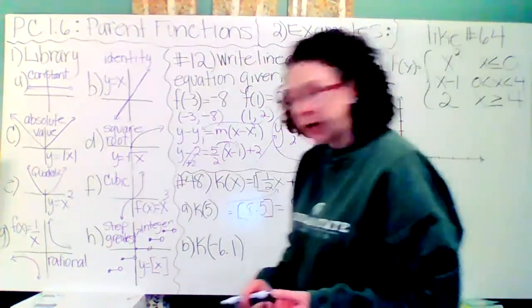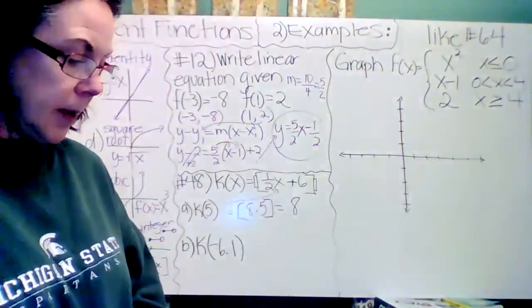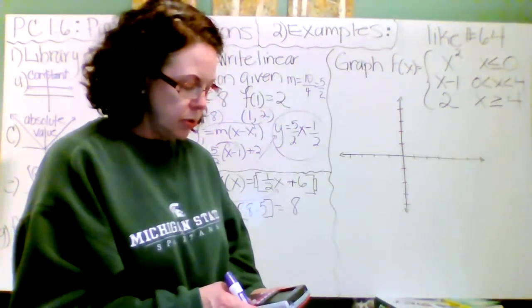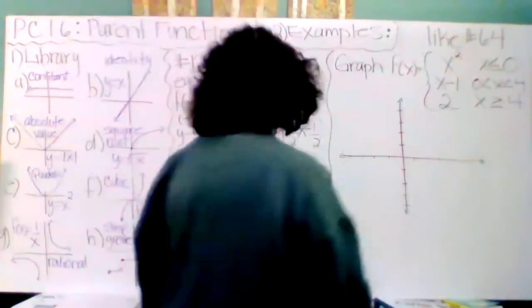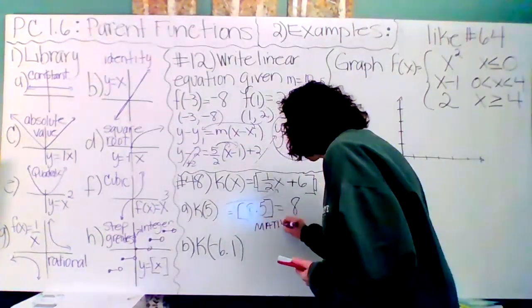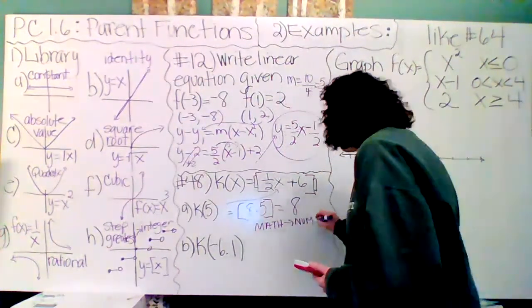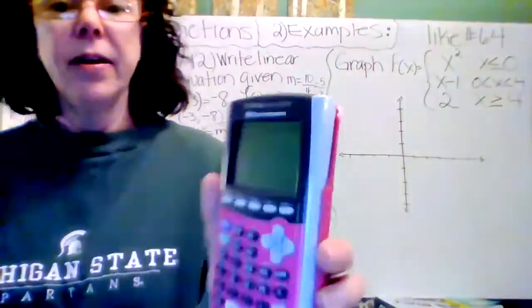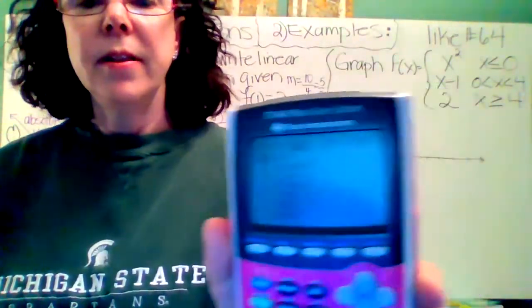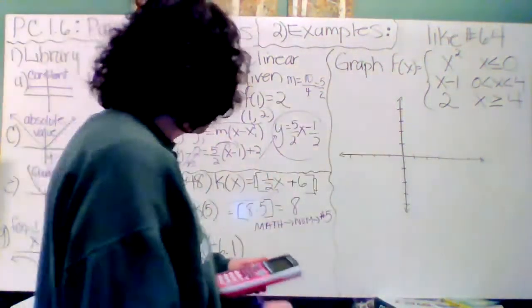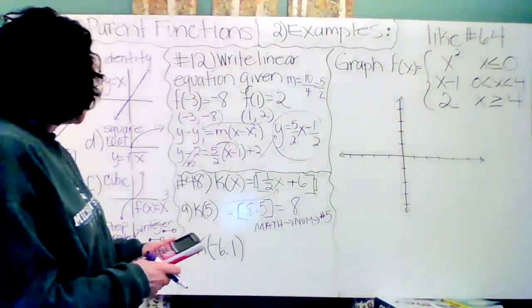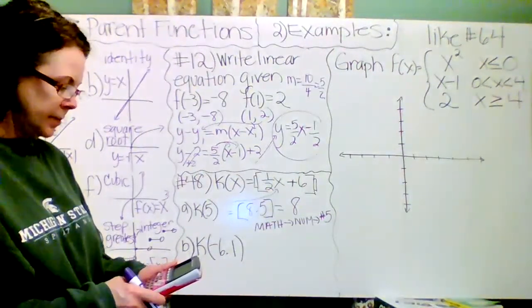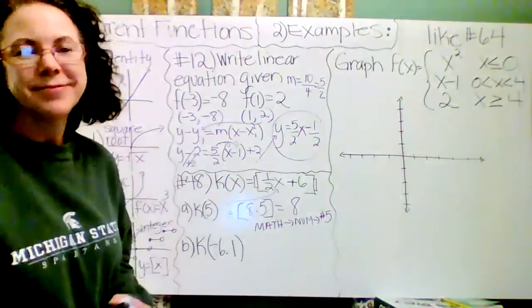How do you do that on your calculator? There is a greatest integer function on your calculator. When you turn it on and go to math, then go over to number, which is one to the right, and you go number five. So I did math and then number. Number five, I-N-T. Let's go ahead and do that. I'm going to do one half times five plus six. And it does, in fact, output an eight. We did well.